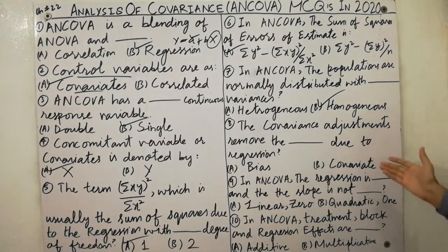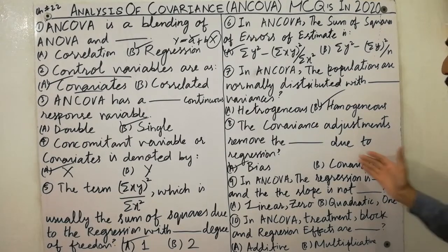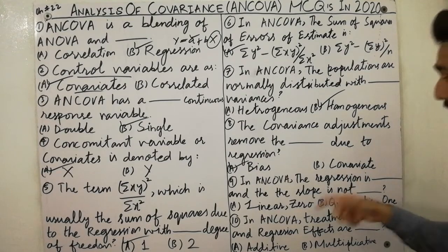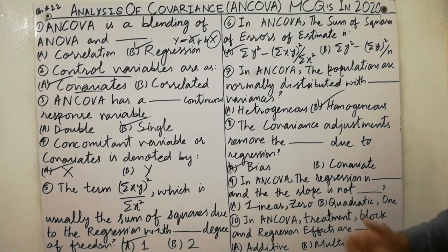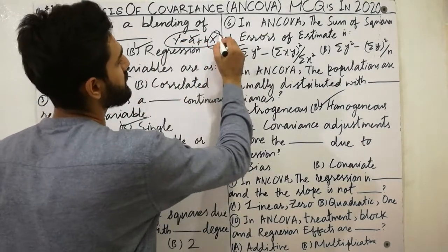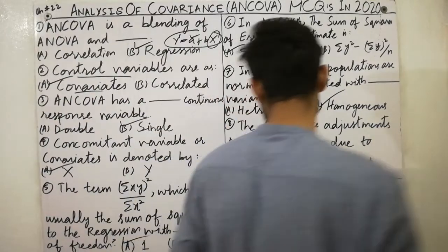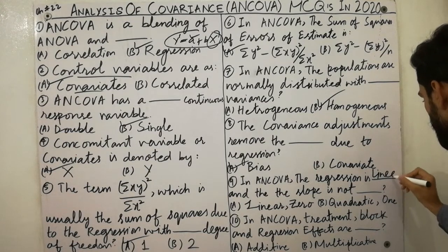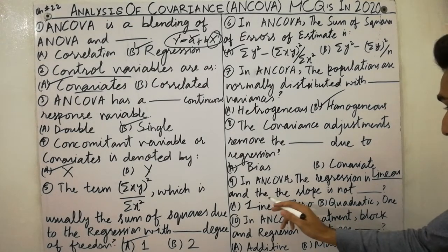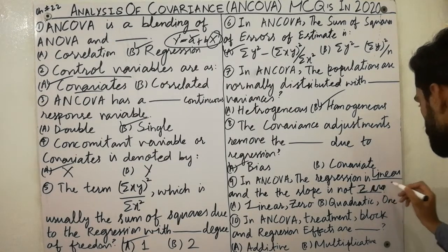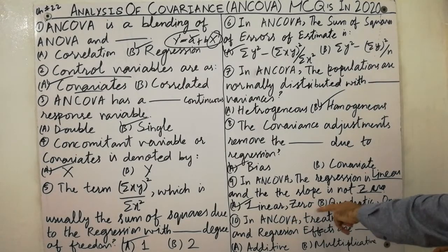The covariate adjustments always remove the bias due to regression. In ANCOVA, the regression is linear and the slope is not zero. The regression equation is linear because its degree is 1, and the slope degree is also 1. So must remember: in ANCOVA the regression is always linear and the slope is not zero.